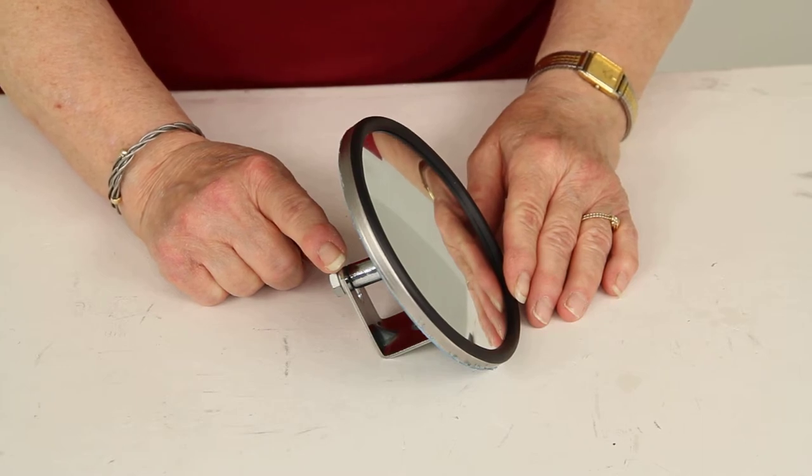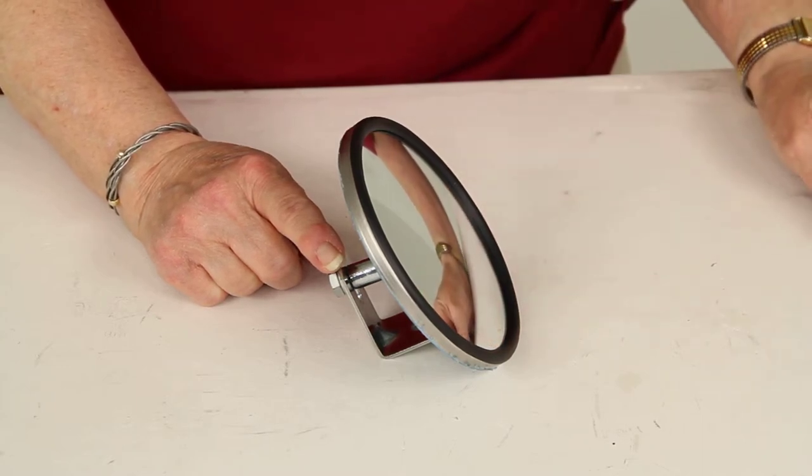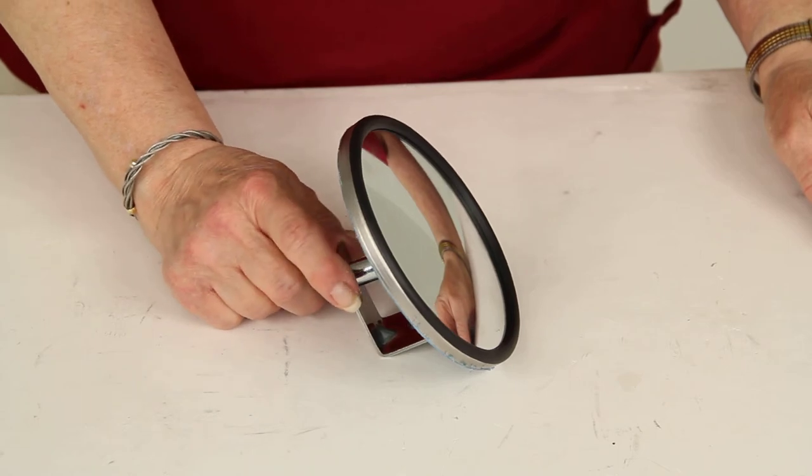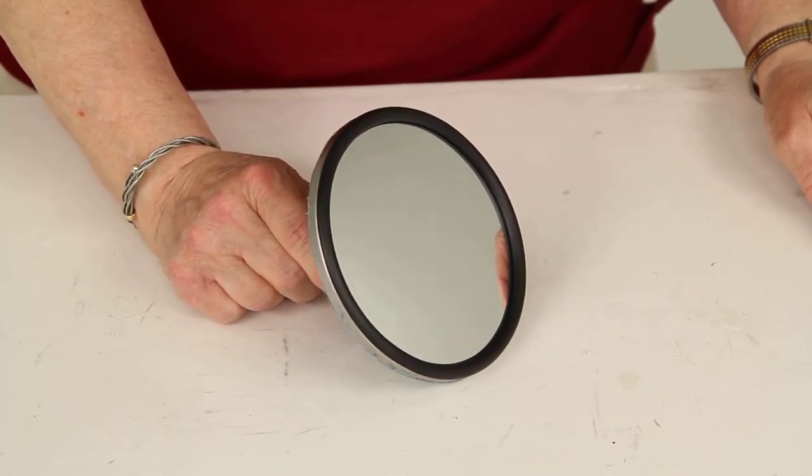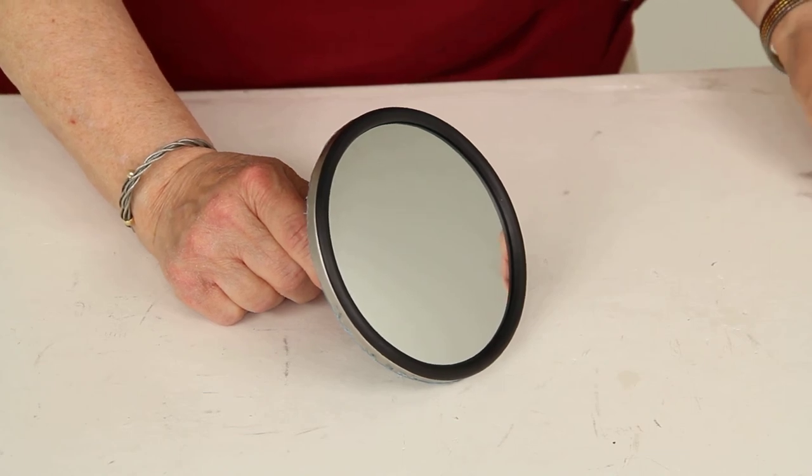And that is it for part number WM6510, the Wheelmasters convex blind spot mirror for your Wheelmasters Vision Plus and Eagle Vision towing mirrors.